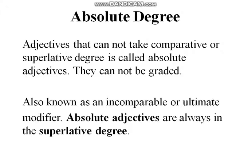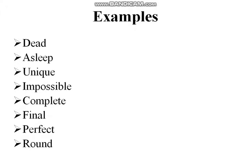Then we have another type called absolute degree. Adjectives that cannot take comparative or superlative degree are called absolute adjectives. These adjectives have no comparative or superlative degree — they cannot be graded. Also known as incomparable or ultimate modifiers. Absolute adjectives are always in the superlative degree, that's why we don't make any comparison. Examples: dead, asleep, unique, impossible, complete, final, perfect, round.